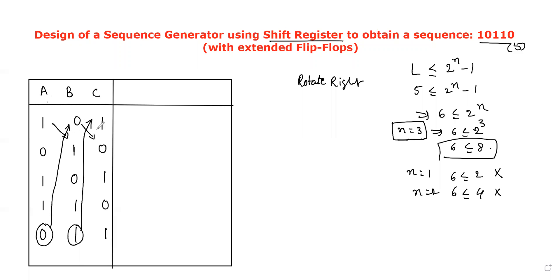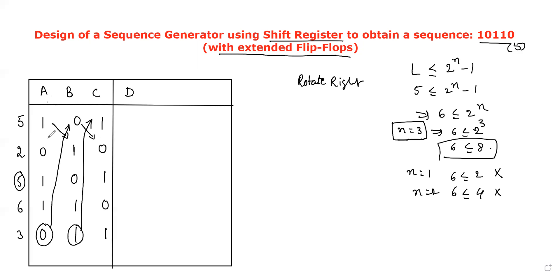The states are: one-zero-one, zero-one-zero, one-zero-one, one-one-zero. To check whether the states are unique, write the equivalent decimal numbers. Here they are 5, 2, 5, 6, 3. Now you can see that 5 is repeated — it appears two times. That is why we have to add one more flip-flop. If any one of the states is repeated, then we compulsory have to add one more flip-flop.